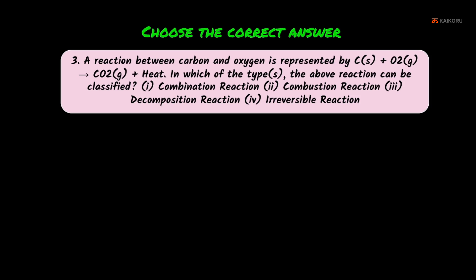Fourth option: irreversible reaction. Carbon and oxygen go to carbon dioxide, which is a gas. Once the gas is formed, it escapes. So this reaction cannot be reversed, making it an irreversible reaction — fourth option is also correct.